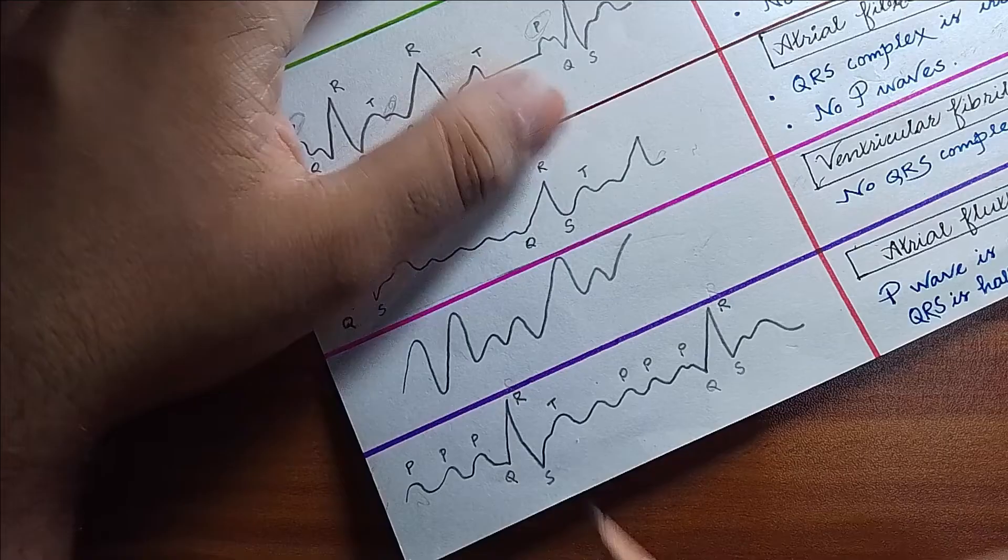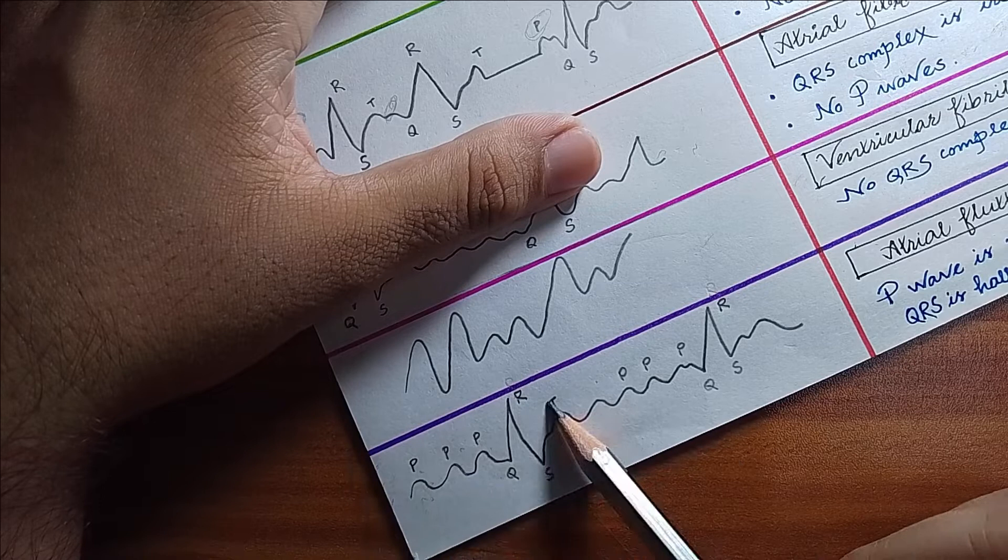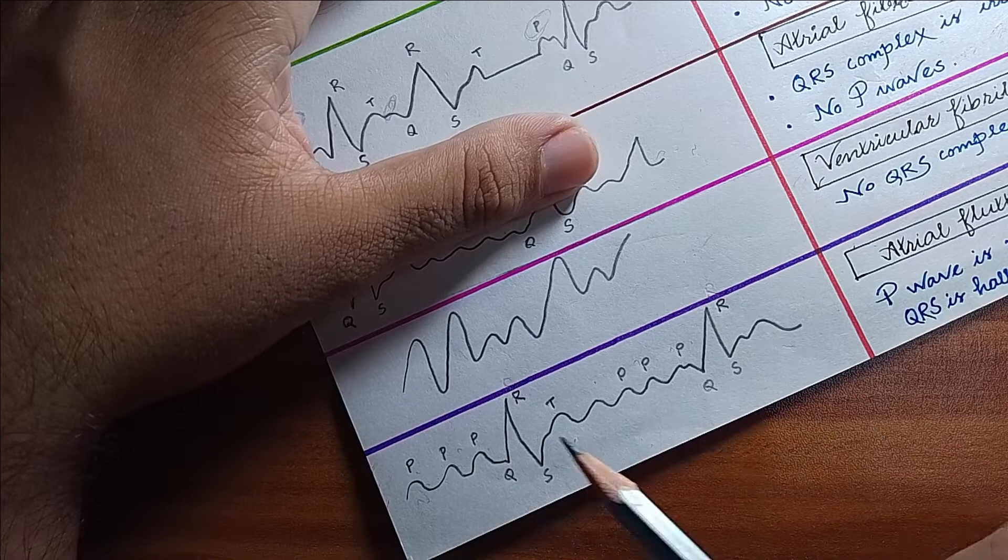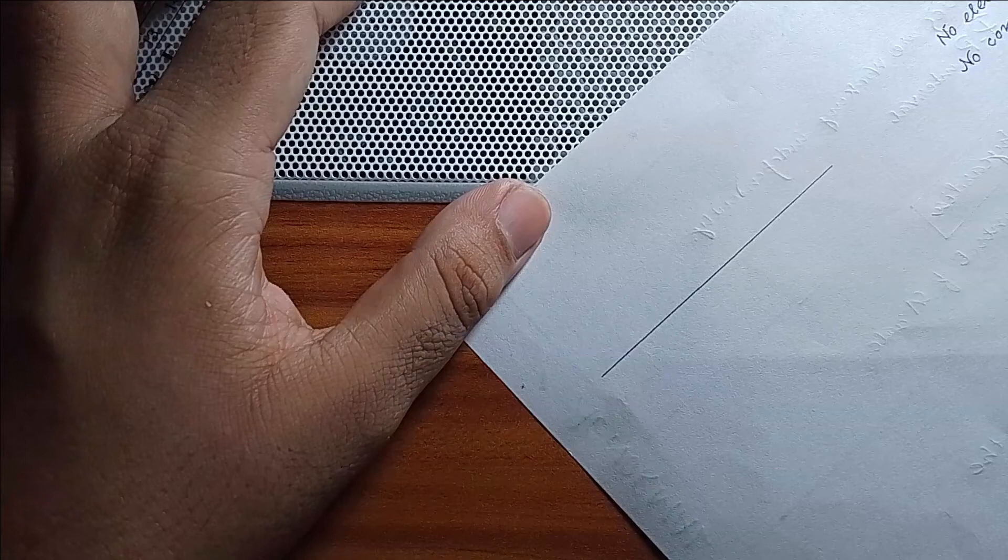...there is a regular P wave but the QRS complex is half or quarter of the atrial rate, so the most likely diagnosis is atrial flutter. Other than that, you can also get a flat ECG reading, that means there is...